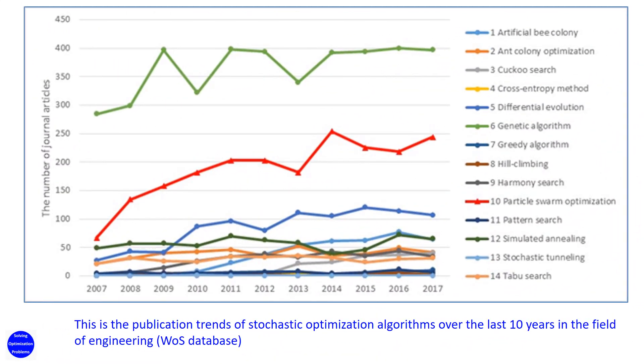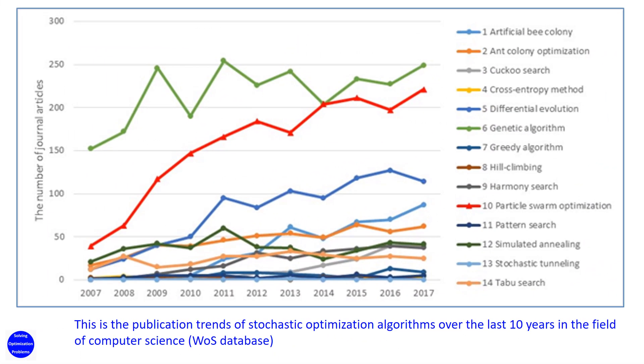This is the publication trends of stochastic optimization algorithms over the last 10 years in the field of engineering. This is the publication trends of stochastic optimization algorithms over the last 10 years in the field of computer science.